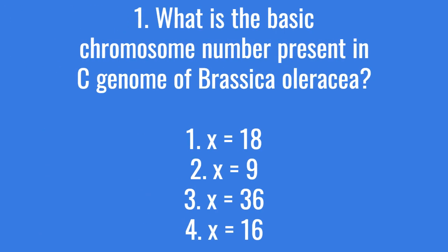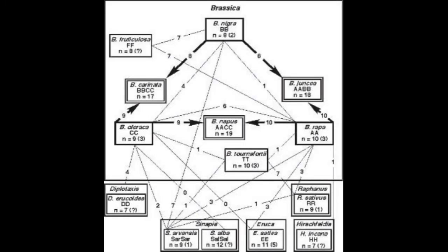What is the basic chromosome number present in the C genome of Brassica oleracea? The correct answer is option 2: x = 9. The Triangle of U explains the evolution and relationships between members of the genus Brassica.